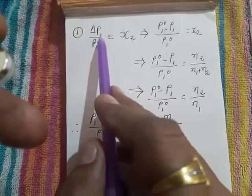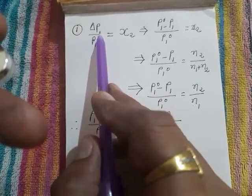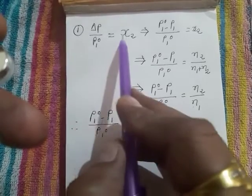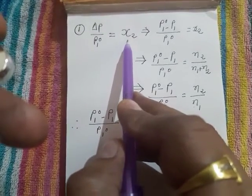This delta P is the change in the vapor pressure when solution is prepared. This P₁⁰ is the vapor pressure of pure solvent. This one is the mole fraction of solute.